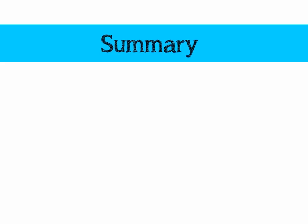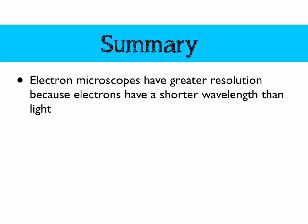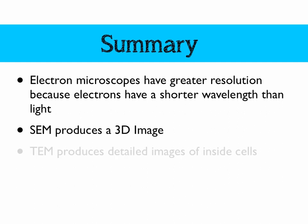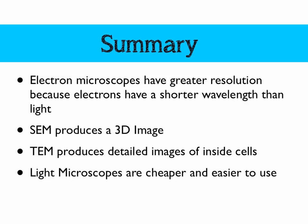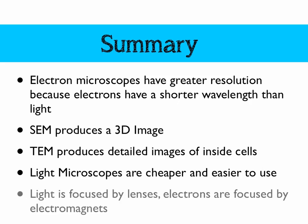To summarise: electron microscopes have greater resolution because they use electrons, which have a shorter wavelength than light. SEM — scanning electron microscopes — produce a 3D-looking image. TEM — transmission electron microscopes — produce detailed images of the inside of cells. Light microscopes are cheaper and more user-friendly. Light is focused by glass lenses, whereas electrons are focused by electromagnets.